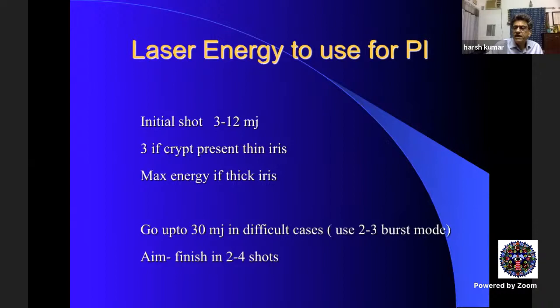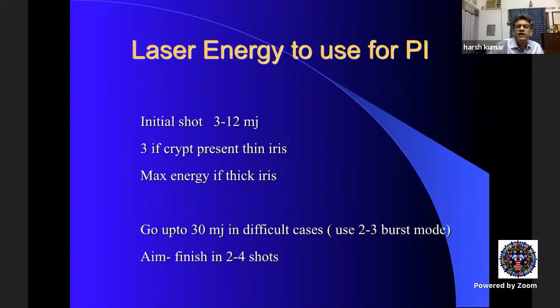Regarding energy: with a new laser even 3 millijoules may suffice; with an old laser even 12 may not be enough. The aim is to complete the iridotomy in three to four shots. Using 12 millijoules in one shot on a new laser may damage or subluxate the lens beneath. Using too little power results in only superficial chipping with pigment in the anterior chamber without penetration. If there is a crypt, 4–5 millijoules may be enough; a thick iris may need the highest setting.